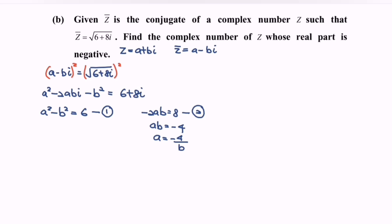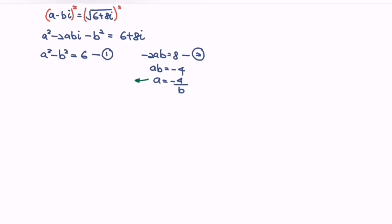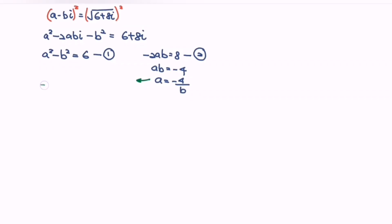Then substitute a into the first equation. We get negative 4 over b, squared, minus b squared, equals 6.